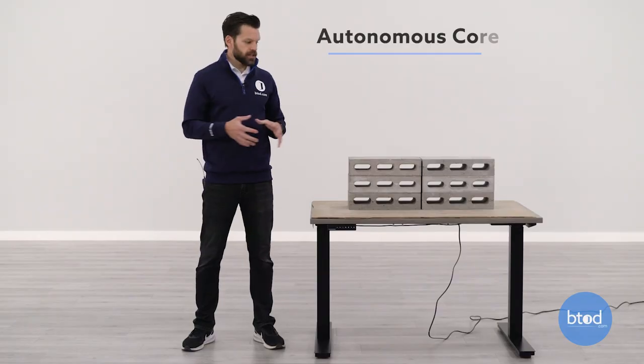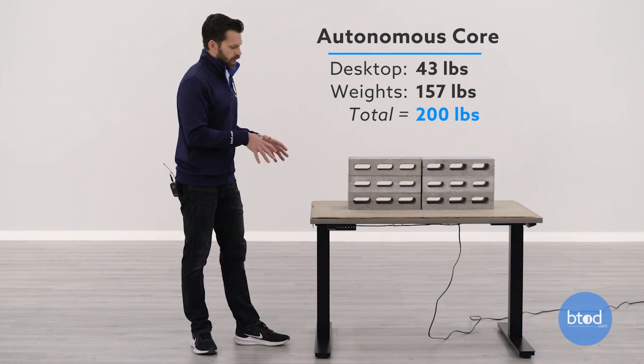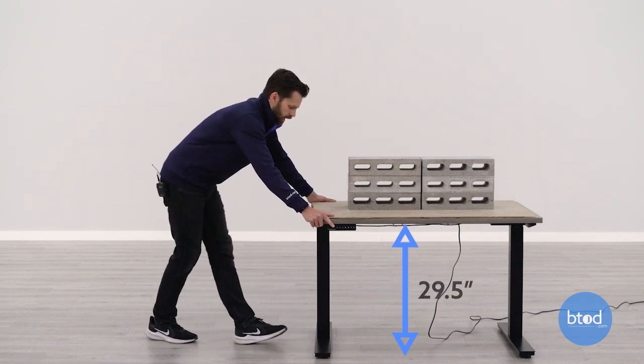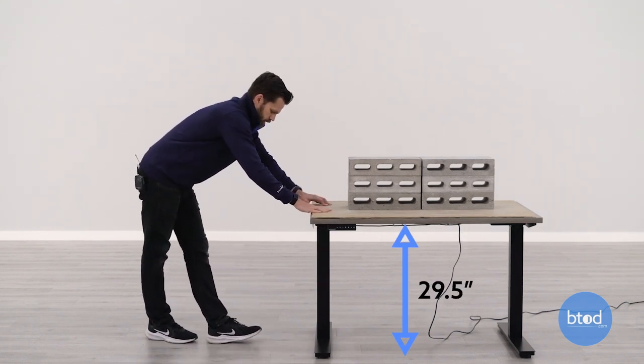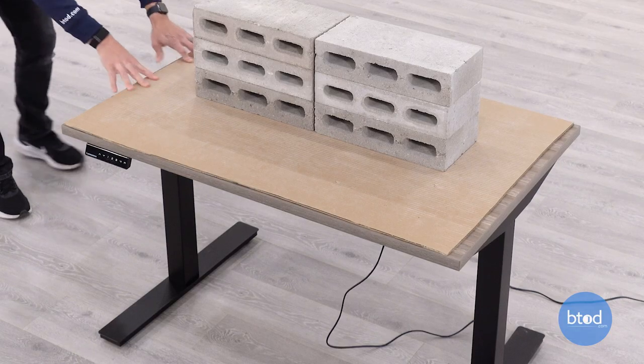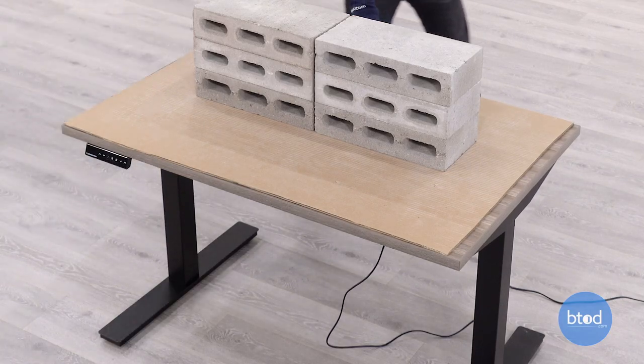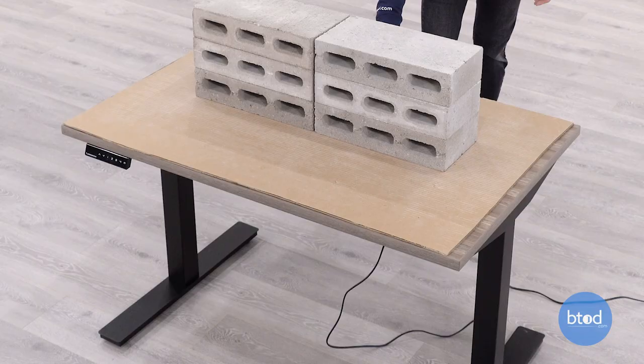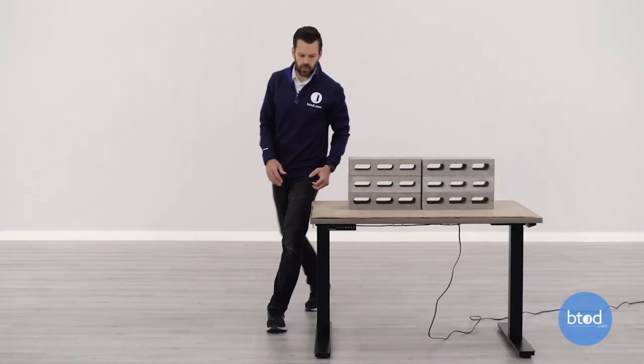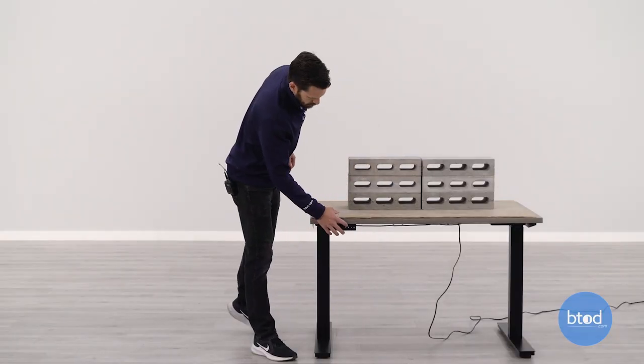For our second test, we've got the desk set at 200 pounds. Again, we're at the bottom height here, 29 and a half inches. Nice and solid. Front to back. No motion there either. So we'll take it up to 39 inches.